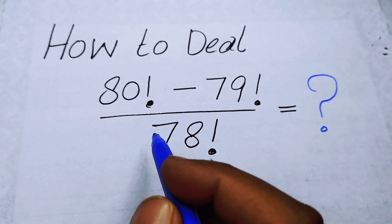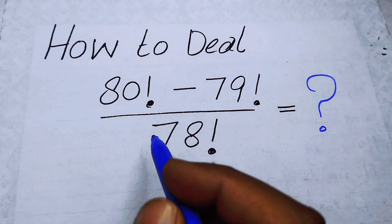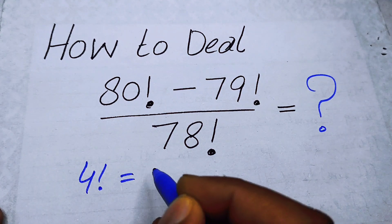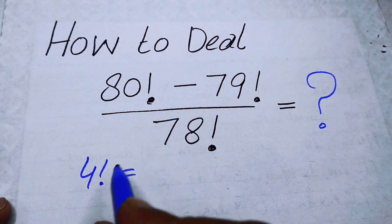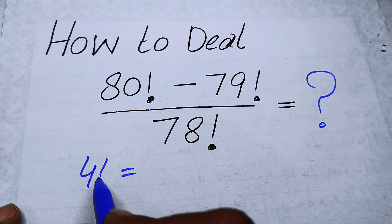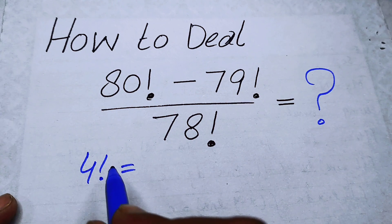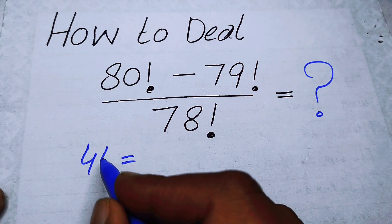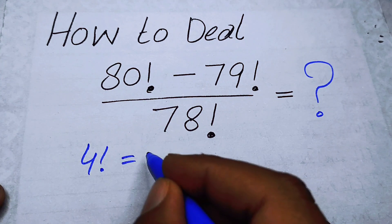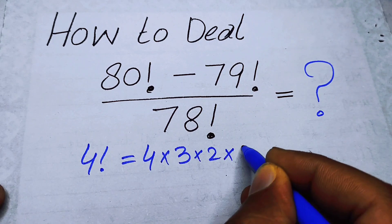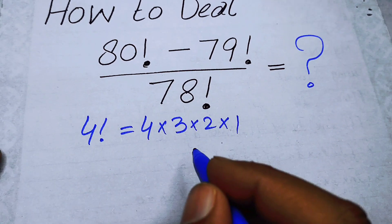For example, if we have 4 factorial, the meaning of factorial is that we multiply all the natural numbers which are lesser than or equal to 4. So 4! = 4 × 3 × 2 × 1.